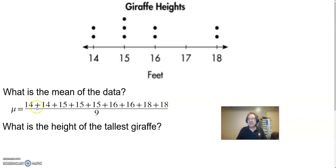So 14 plus 14 plus 15 plus 15 plus 15 plus 16 plus 16 plus 18 plus 18, and there are nine points. When I put that into my calculator I get that my mean, this little μ right here, it's the Greek letter mu, it's about 15.67. Remember the squiggle equal sign means I rounded.